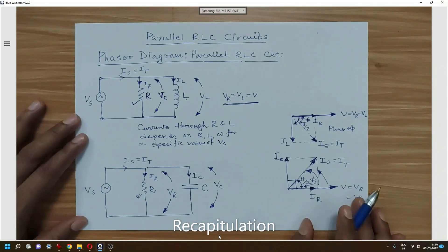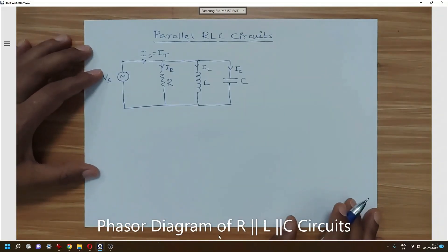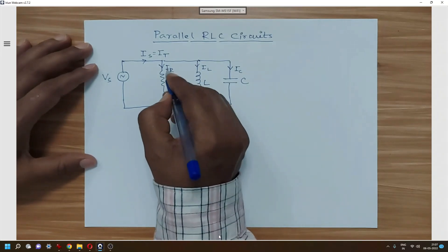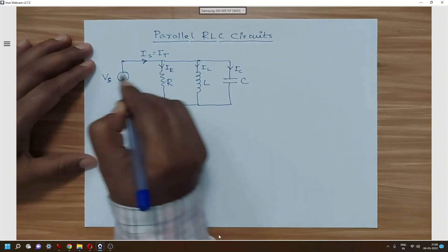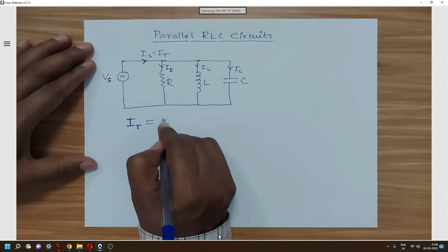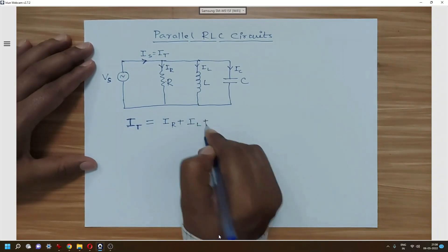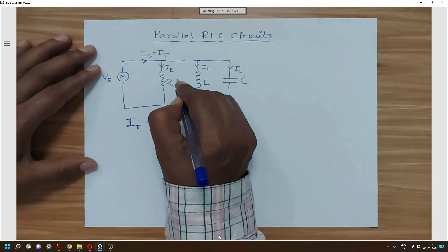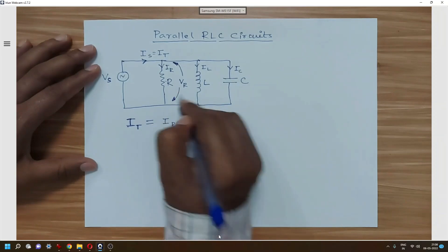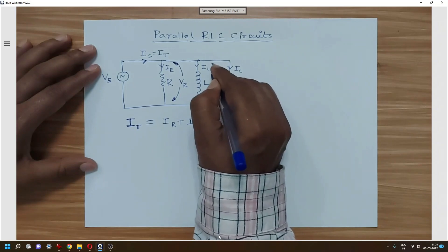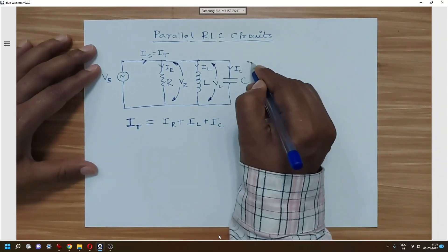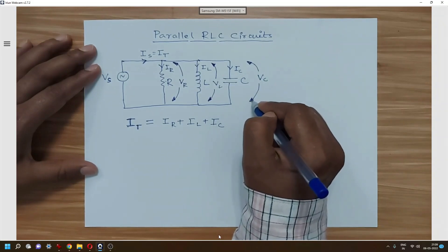Now for the parallel RLC circuit, the current produced by Vs is divided into three different branches. The total current IT = IR + IL + IC. The voltage across the resistor is VR, the voltage across the inductor is VL, and the voltage across the capacitor is VC.